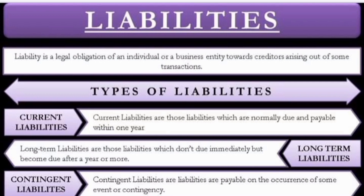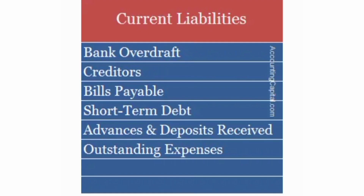Liabilities can be divided into types. The first one is current liabilities — these are short-term liabilities. Examples of current liabilities include bank overdraft, creditors, bills payable, short-term debt, advances, and outstanding expenses. If you have a bank overdraft, you can borrow up to a limit. Creditors are those from whom we borrow goods or cash — these are liabilities.